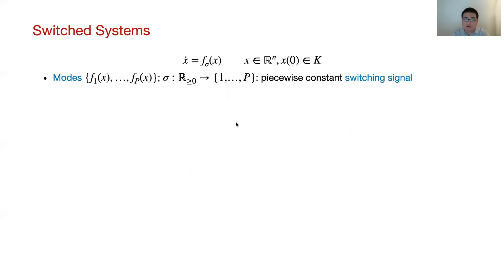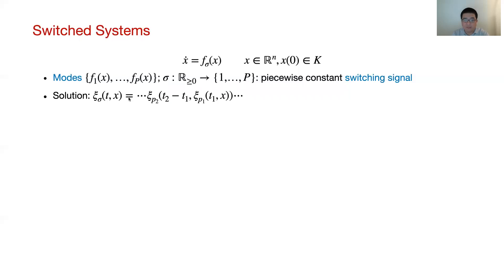In this paper, we study topological entropy of switched systems. In a continuous-time switched system, the system dynamics switch between multiple modes, described by a piecewise constant switching signal sigma(t) indicating the active mode at time t. The solution is driven by mode p1 until the first switch time t1, then by mode p2 until t2, and so on. From the definition of topological entropy, it clearly depends on the distance between solutions, so we first construct a bound for the distance between solutions to the switched system.